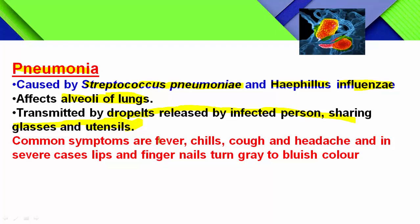The common symptoms of pneumonia include fever, chills, cough, and headache. In severe cases, when there is a very high rate of infection, the lips and fingernails turn grey to bluish in colour. This happens because the alveoli of the lungs are affected, causing problems with respiration; sufficient oxygen is not supplied to body tissues, which causes them to turn grey to bluish in severe infection.